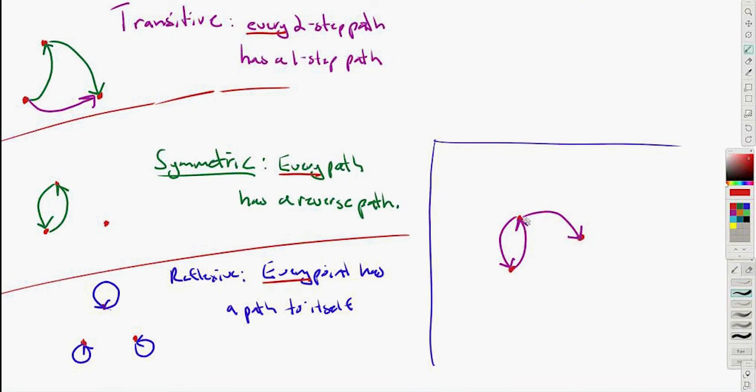It's not transitive because I have a two-step path that does not have a one-step path, and it's clearly not reflexive—there's not even a single one of these loops. So this one here is actually none of the three.